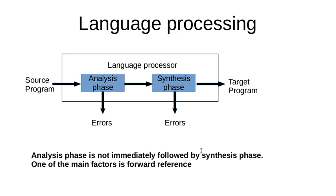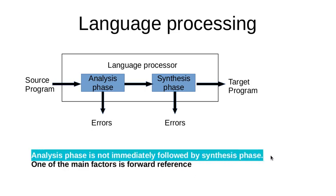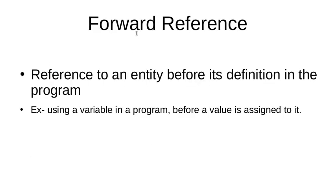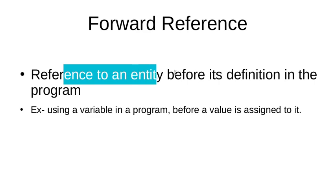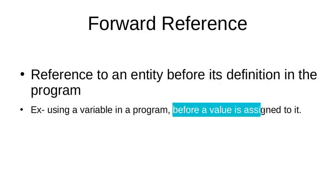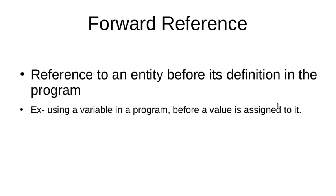One important thing to note is that the analysis phase is not immediately followed by the synthesis phase. One of the main factors is forward reference. Forward reference means we are referring to an entity before its definition in the program — for example, using a variable before a value is assigned to it. These problems can arise especially with function definitions, where we call a function first and then define it later outside the program.